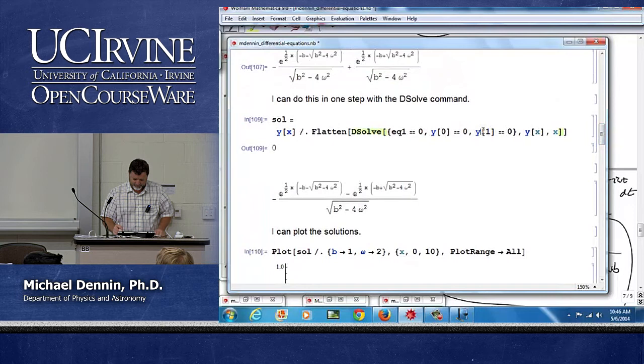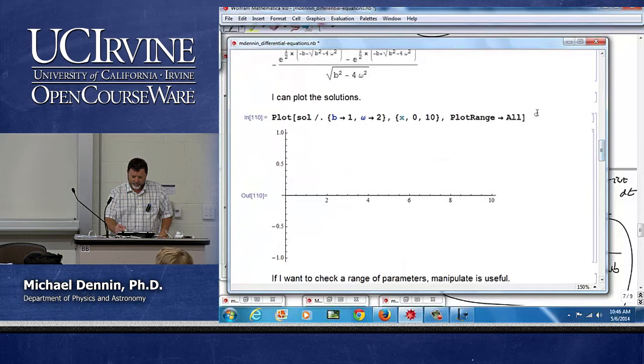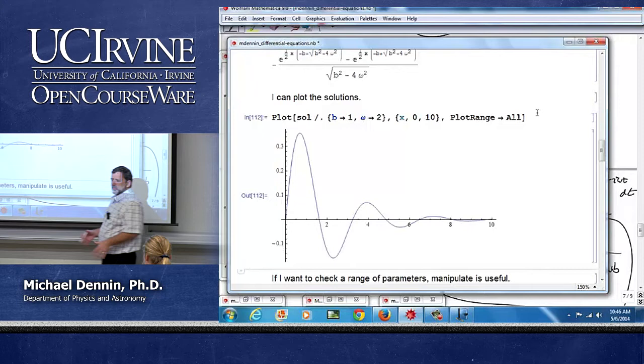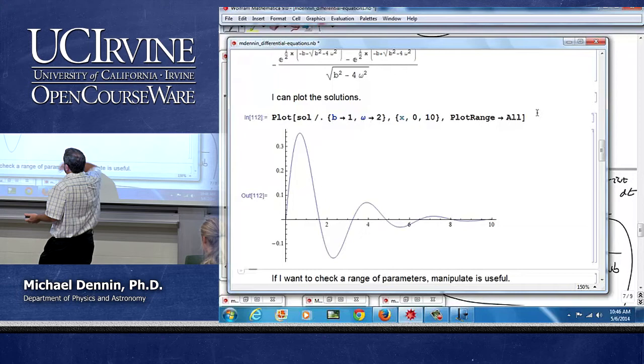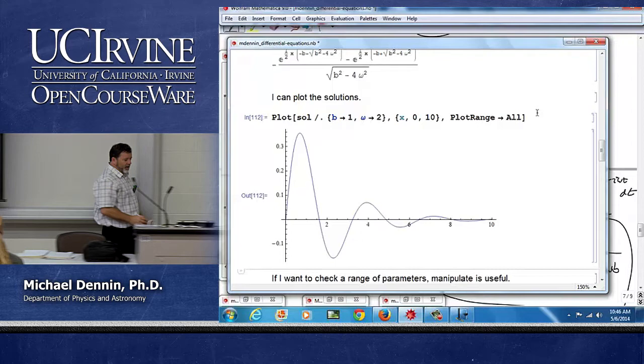One thing, I changed the solution to zero. So, one thing to do, keep in mind that when you plot, I can't plot a function with b's and omegas in it. You have to give it a number. So there's a frequency of two and a damping of one. And it does what we expect an oscillating sine wave to do as it damps.